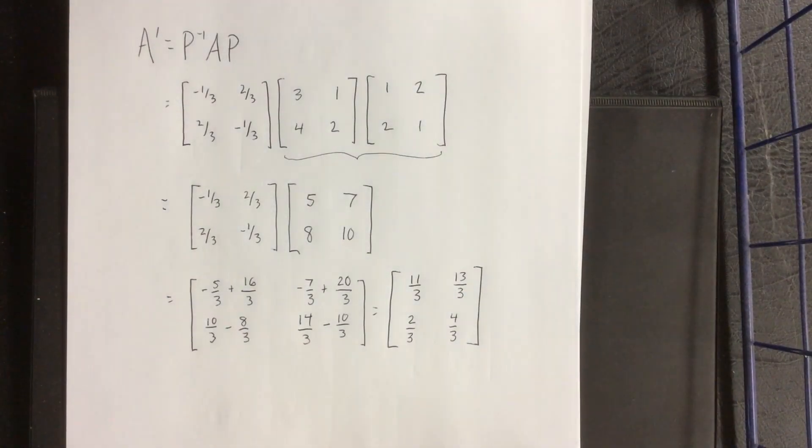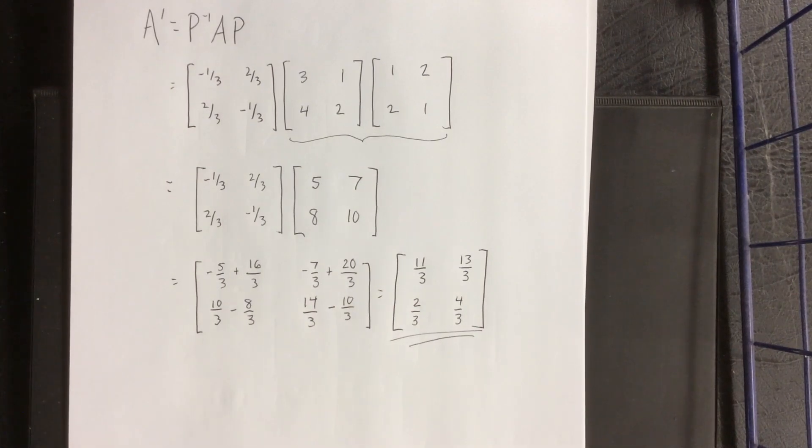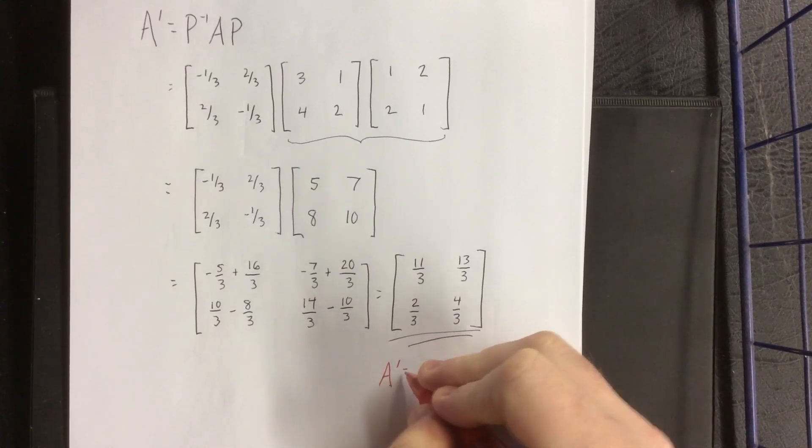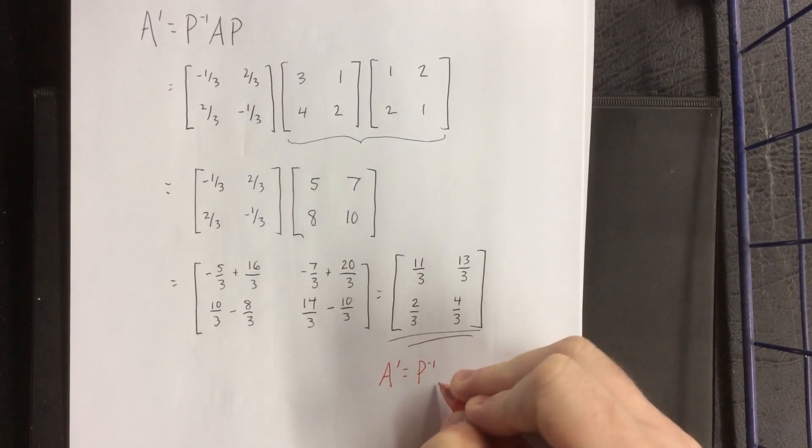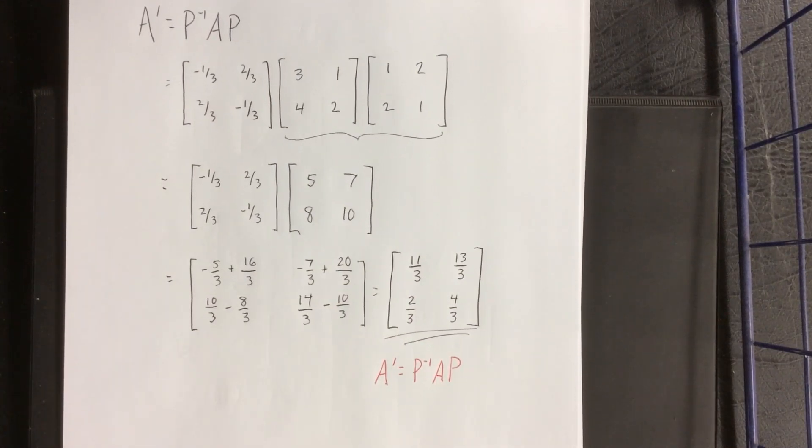All right, so here is the matrix of T relative to P. So to reiterate once more what just happened, that was A' equals P inverse times A times P. We can come up with A and P relatively easily, which allows us through the use of a little bit of manipulation to come up with a nice and easy A'. I hope that this was helpful and I'll see you all for the next one.